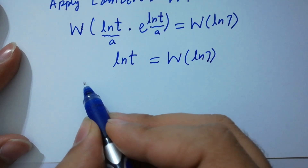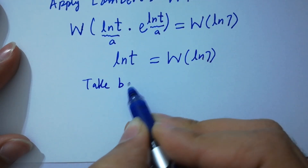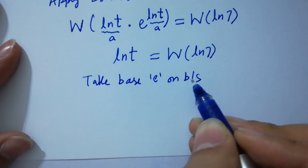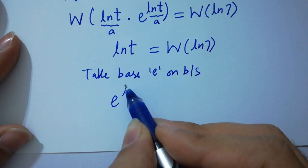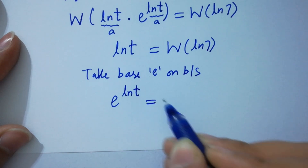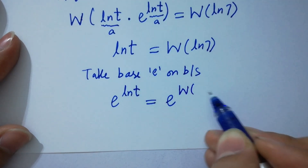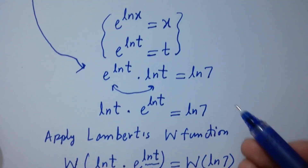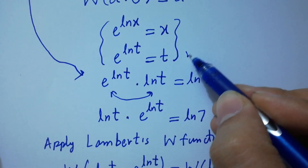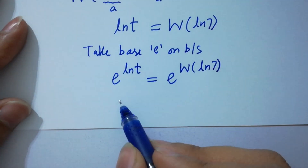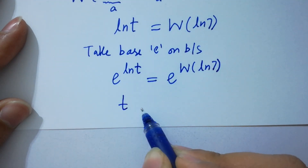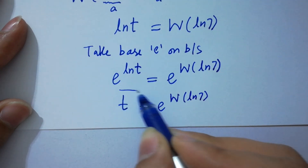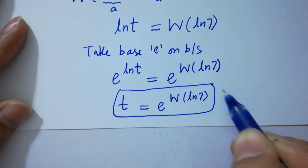In the next step, take base e on both sides: e^(ln t) = e^(W(ln 7)). And as we know, e^(ln t) equals t, so it will be t = e^(W(ln 7)), which is the value of t.